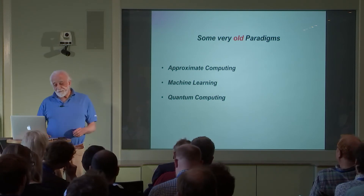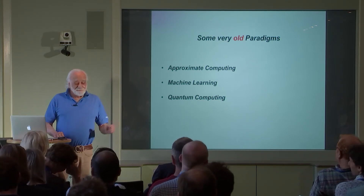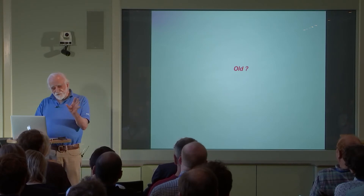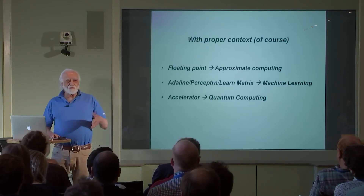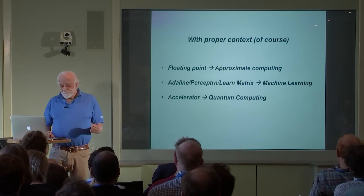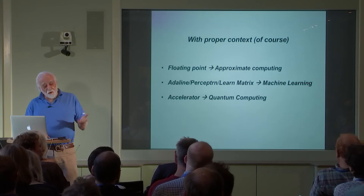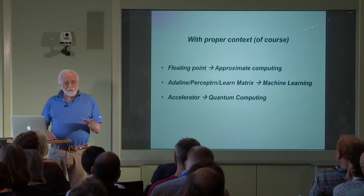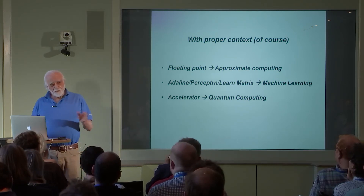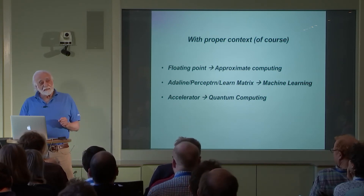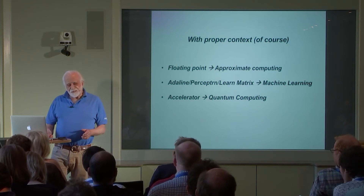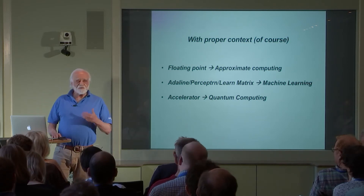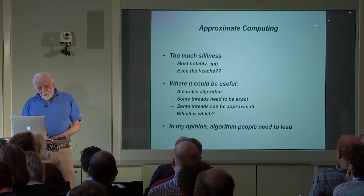Some very old paradigms: approximate computing, machine learning, quantum computing — all old, if you understand the context. We've been doing approximate computing for years; we used to call it floating point. Machine learning is just an outgrowth of earlier work. When I was a graduate student, I was part of the Adaline project under Professor Widrow. At the same time, Frank Rosenblatt at Cornell was doing the perceptron, and Steinbuch in Karlsruhe was doing the learning matrix. Machine learning is not a new thing. And quantum computing is just an example of accelerators.